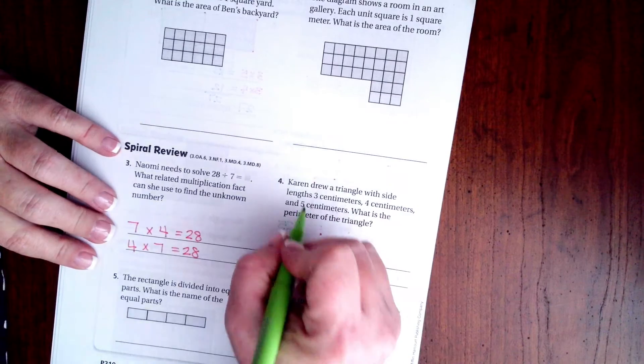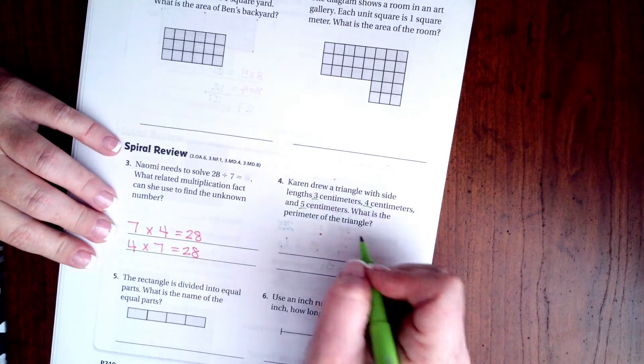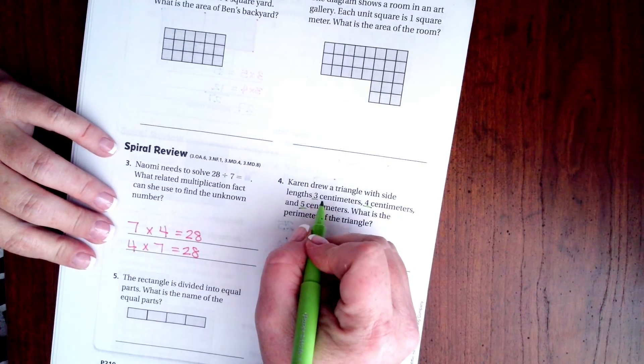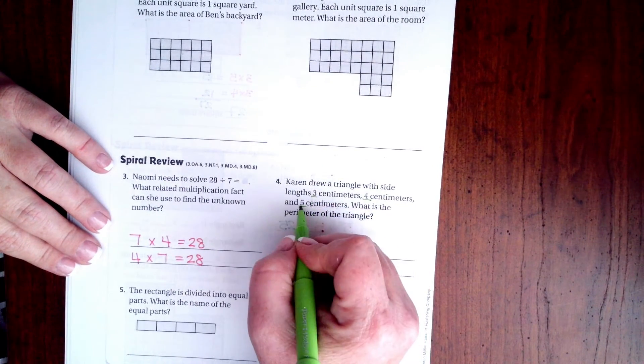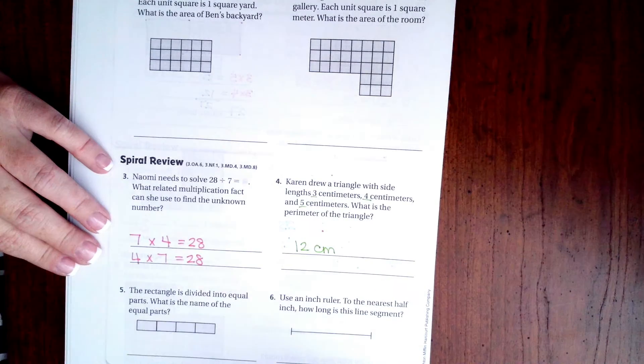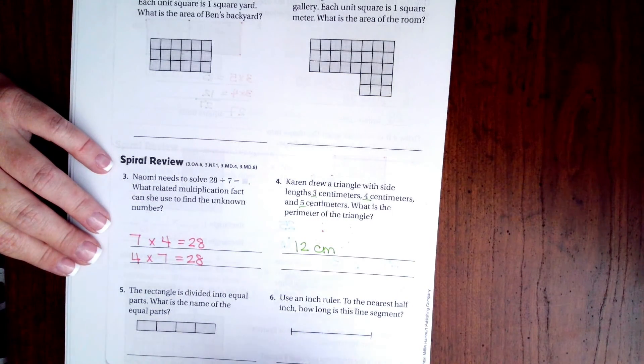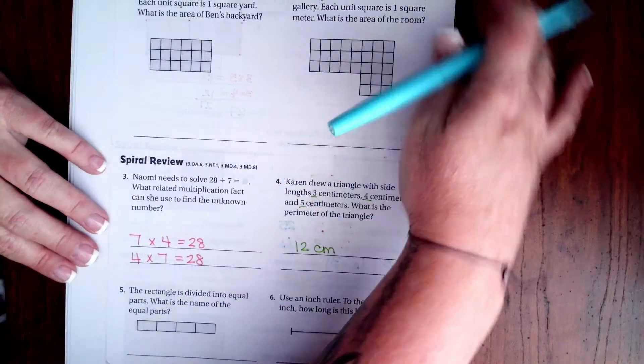Karen drew a triangle with a side length of 3 centimeters, 4 centimeters, and 5 centimeters. What's the perimeter? Remember, perimeter, we're just adding them up. So 3 plus 4 is 7, plus 5 is 12 centimeters. Now, we did not multiply centimeters by centimeters, so it is not centimeters squared. It is just centimeters.